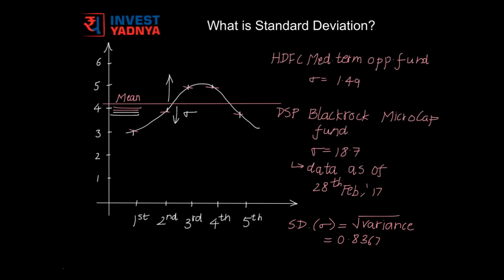Blue-chip funds, debt funds, etc. would have a lower Standard Deviation, while mid-cap and small-cap funds would have higher Standard Deviation. Like in the example that you see in front of you, HDFC Medium-Term Opportunities Fund, which is a debt fund, has a Standard Deviation of 1.49.